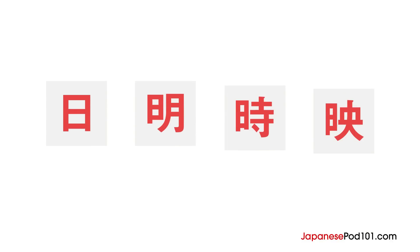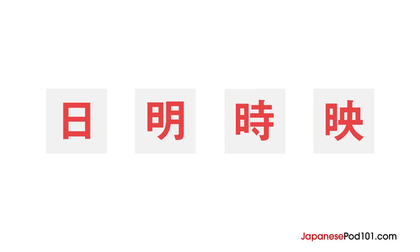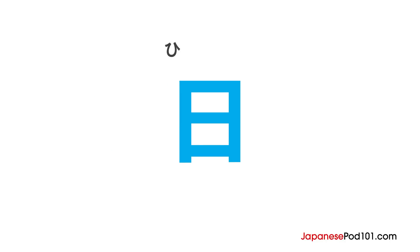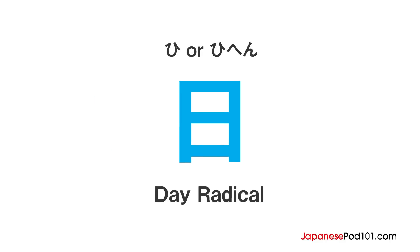Take a look at these kanji characters. Can you guess what they mean? By the end of this lesson, you'll be able to grasp the meaning behind these kanji characters. First off, can you spot the radical that's common in all of these kanji characters? It's this part here. This particular radical is called the day radical, and it's used in some of the most common kanji characters.